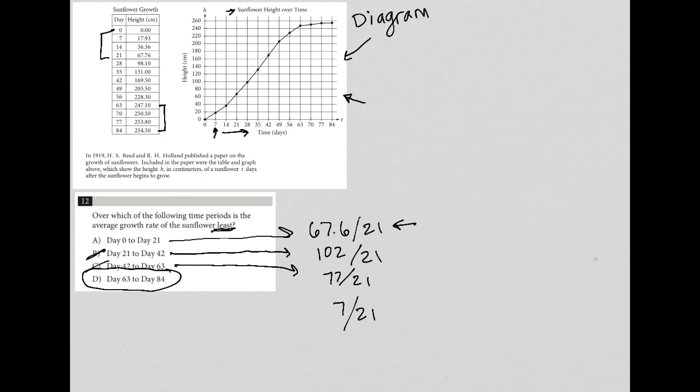Now, you obviously could have also used the graph. And I think the graph in this case may have been simpler to see. Because day 63 to 84, here to here, we can see that the slope is pretty flat versus everywhere else is pretty steep. So if you did that, you probably would get to the answer a bit faster.